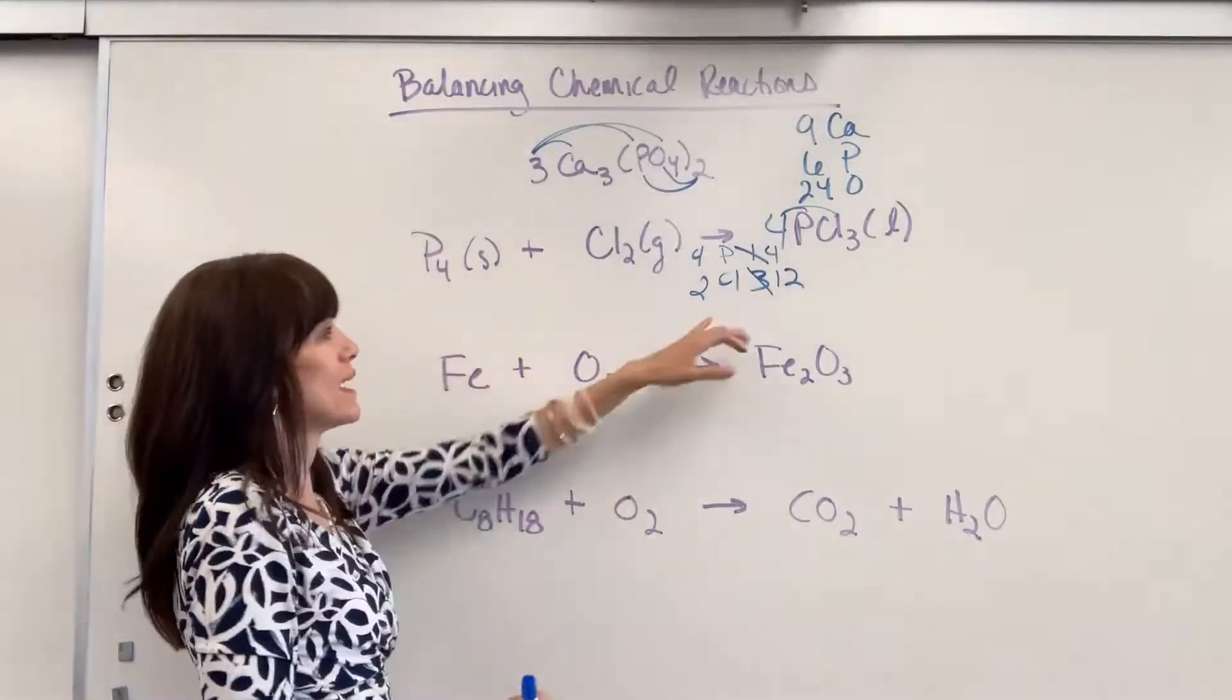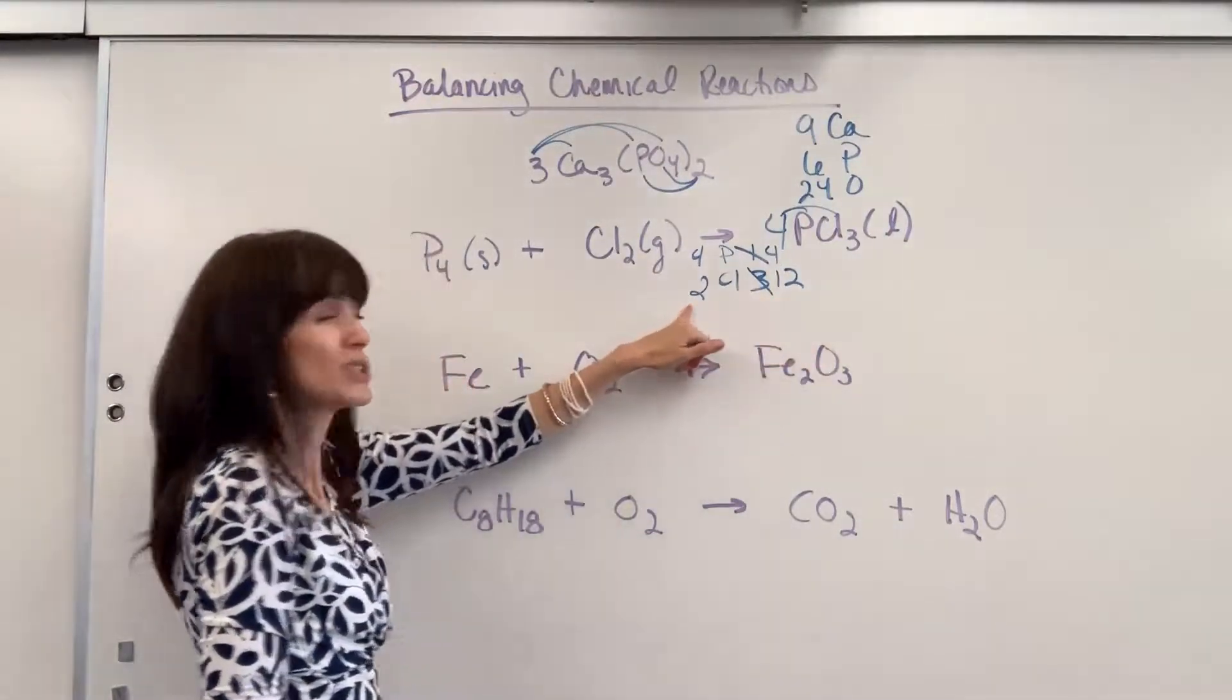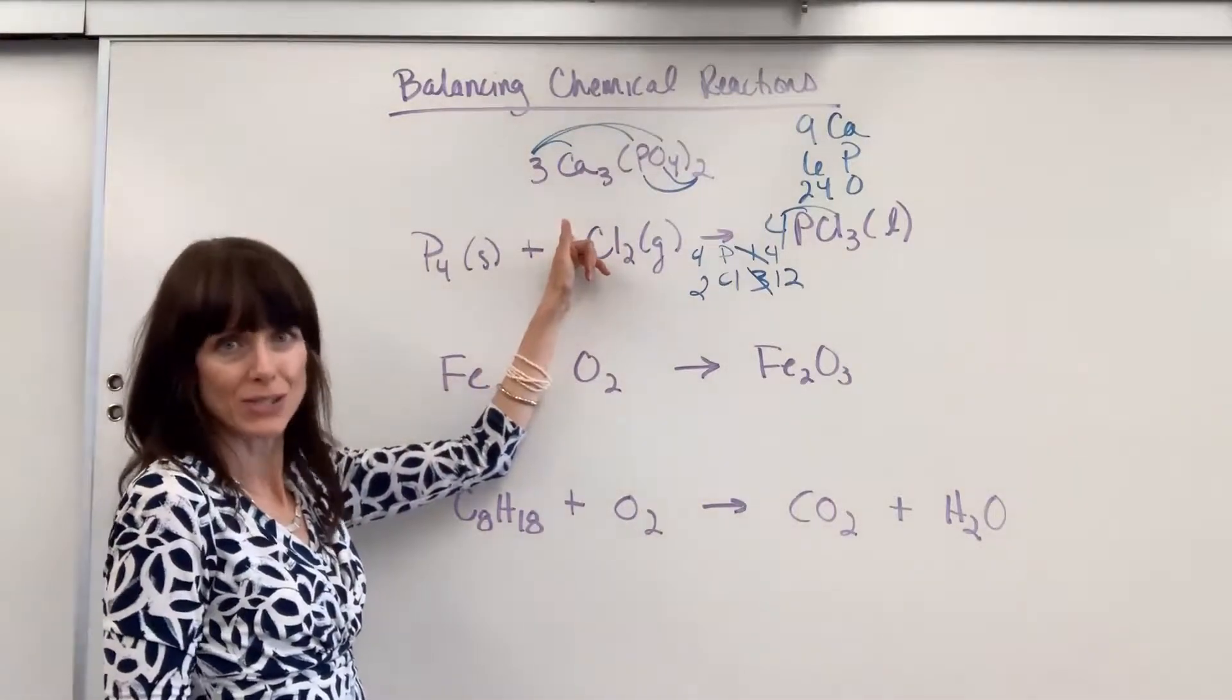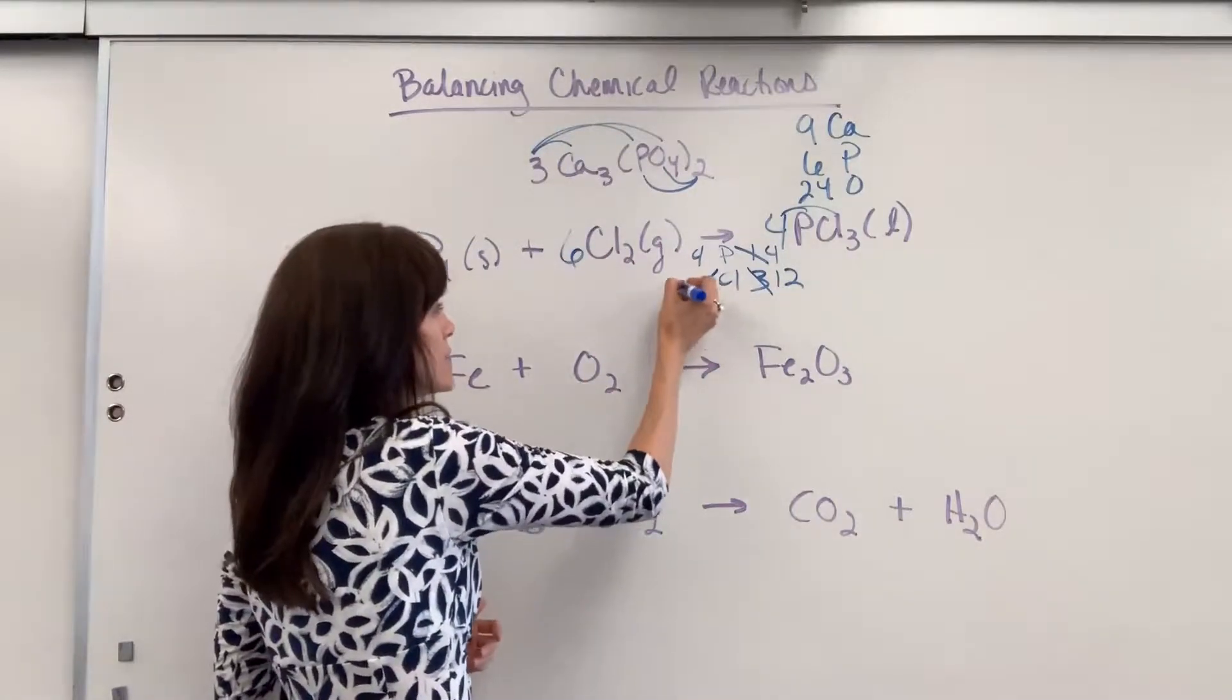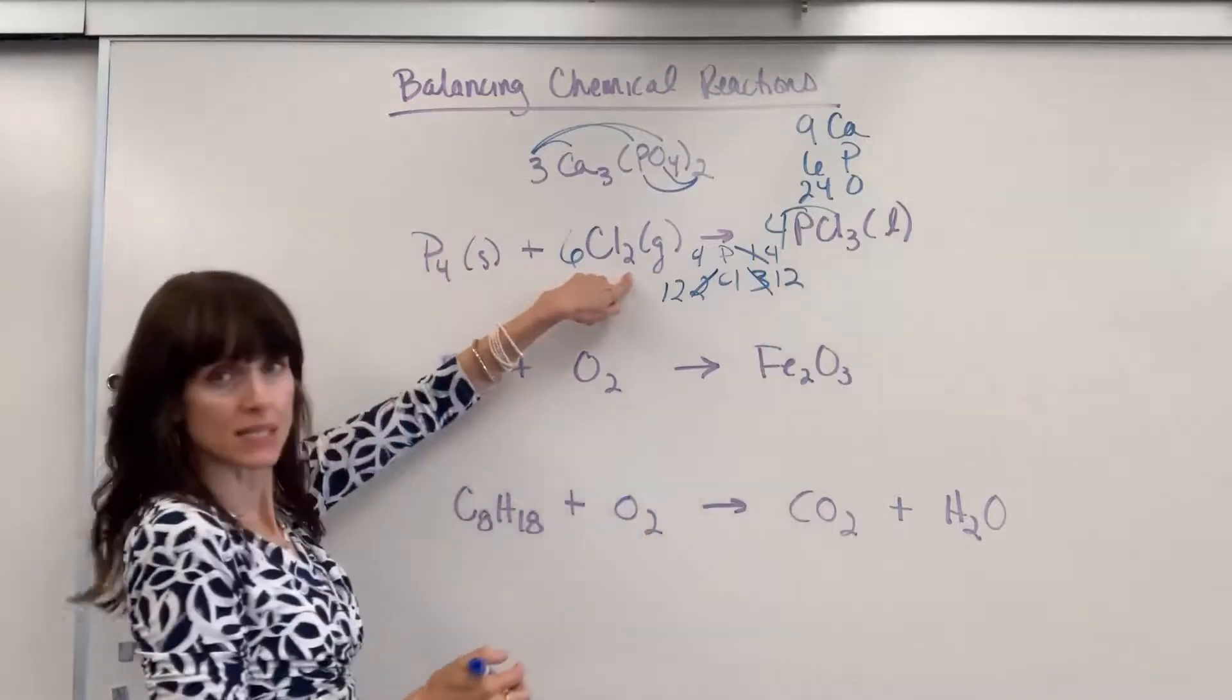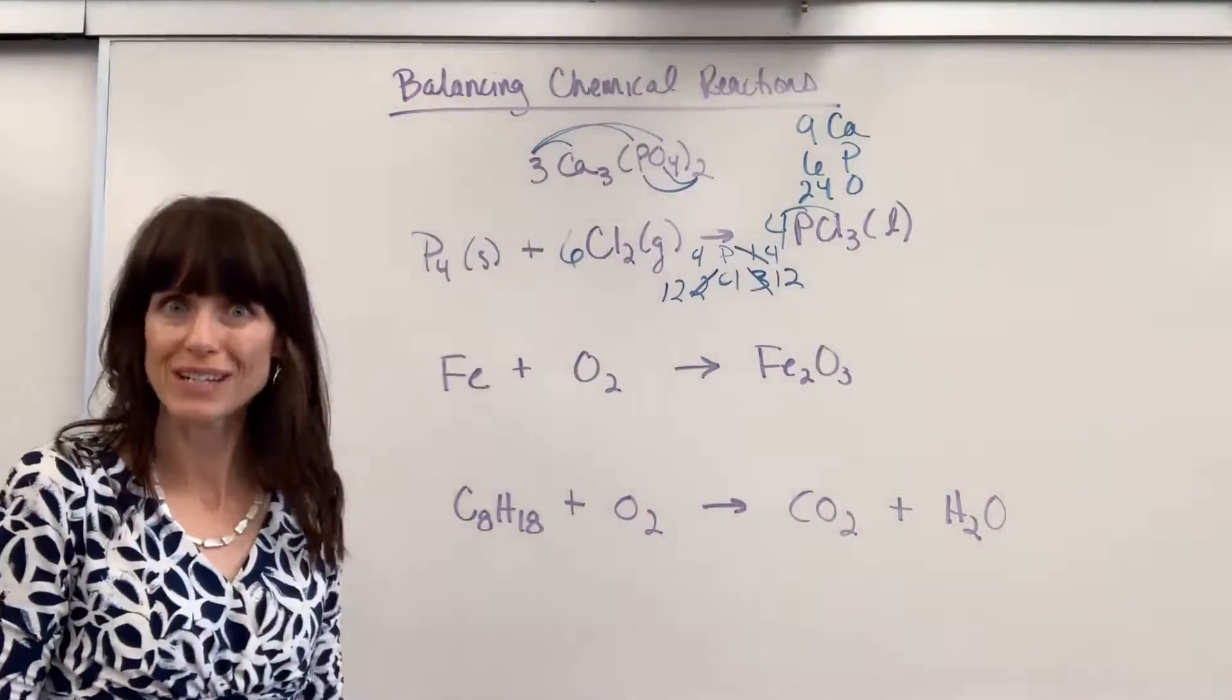All right. Well, the phosphorus are great, but now my chlorine, I've got to fix that. I have 12 on the product, only two on the reactant. What number do I have to put right here to multiply by two to get 12? Six. There we go. Six times two gives us 12. I now have four and four phosphorus. Six times two is 12. Four times three is 12. 12 and 12 chlorine. It's balanced.